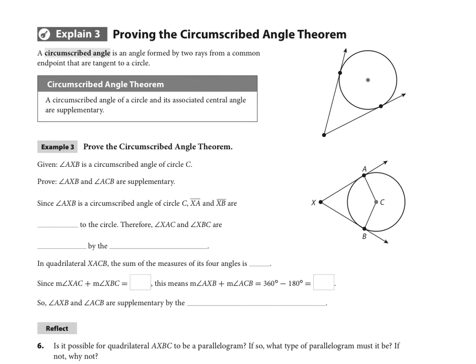So the associated central angle is if we were to draw back to the center from the points of tangency, that this angle out here—we could call it X—and the central angle on the inside there, those two degrees are going to be supplementary.